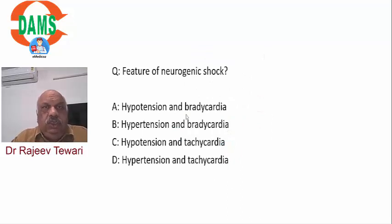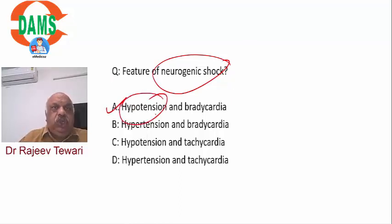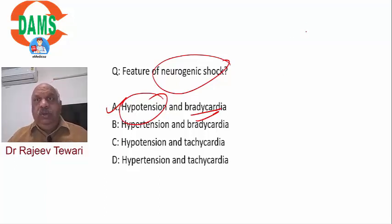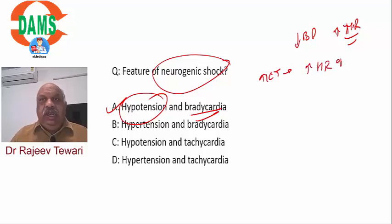Neurogenic shock (from cervical spine injury): sympathetic tone is lost, parasympathetic overtakes, resulting in hypotension AND bradycardia. Normal/hypovolemic shock: hypotension and tachycardia. In raised intracranial pressure (Cushing reflex): hypertension and bradycardia. The reason for bradycardia in raised ICP: to increase end-diastolic volume, stroke volume, and cerebral perfusion pressure. So: neurogenic shock = hypotension + bradycardia; raised ICP = hypertension + bradycardia; other shock = hypotension + tachycardia.